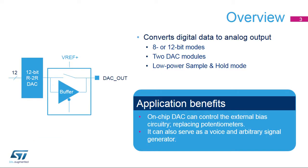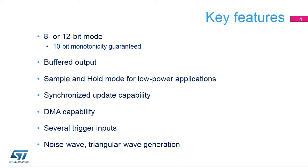The STM32H7 Digital-to-Analog Converter converts 8- or 12-bit digital data to an analog voltage. Two DAC modules are embedded in the STM32H7. A low-power sample and hold mode is also integrated. The DAC can interface with external pots or bias circuitry. It can also create voice and arbitrary signals, offering simple digital-to-analog conversion in an 8- or 12-bit mode.